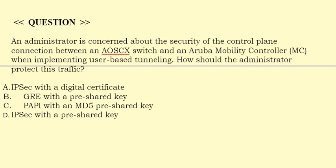Next question: An administrator is concerned about the security of the control plane connection between an AOS CX switch and an Aruba Mobility Controller (MC) when implementing user-based tunneling. How should the administrator protect this traffic? Option A: IPsec with a digital certificate. Option B: GRE with a pre-shared key. Option C: PAPI with an MD5 pre-shared key. Option D: IPsec with a pre-shared key.